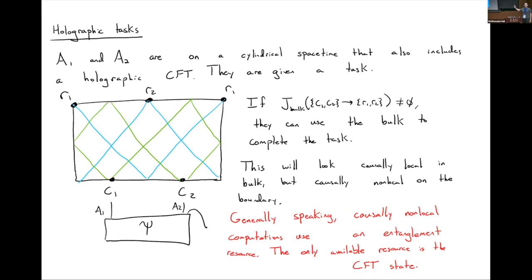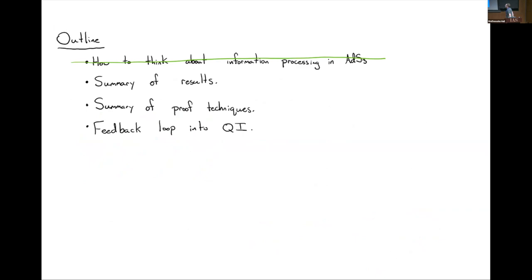The only entanglement resource available to a1 and a2 is the CFT state, so it makes sense that when such a thing is possible, we can constrain the entanglement structure of the CFT by knowing it has to be usable as a resource for a particular task. All of this should be taken as motivation for why we should be able to prove some connection between causality and entanglement. You can make all of this much more precise and make strong arguments for certain cases why certain kinds of entanglement would be necessary.